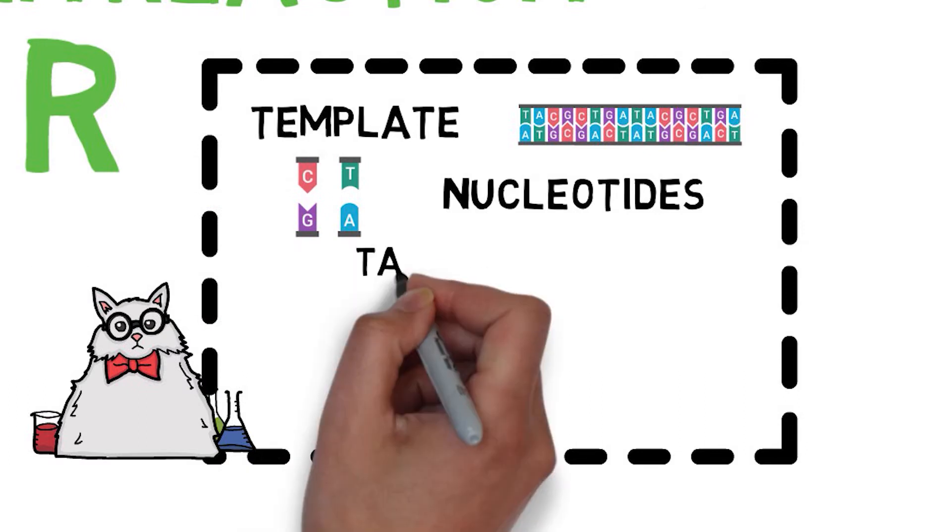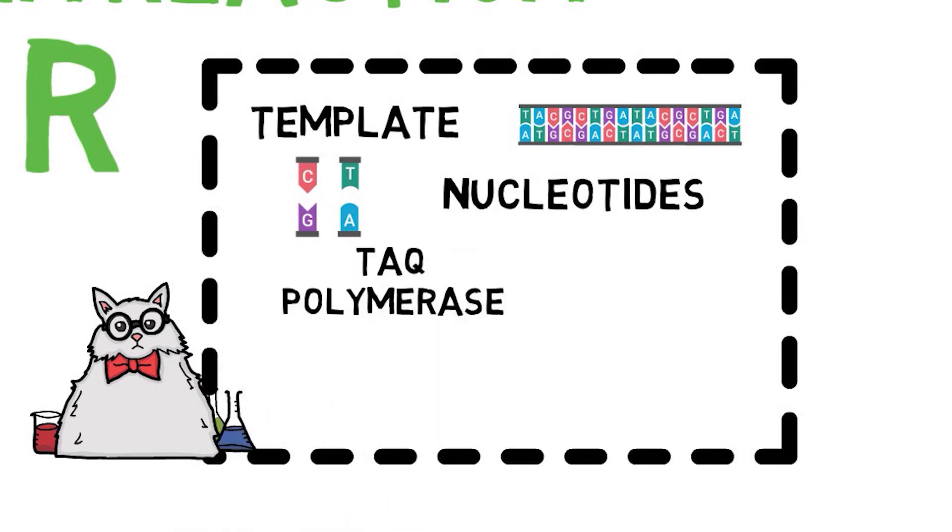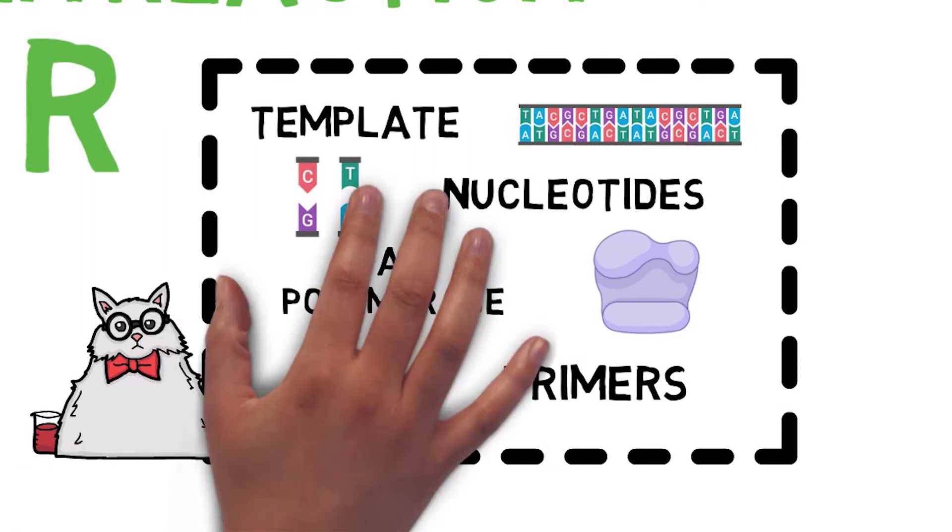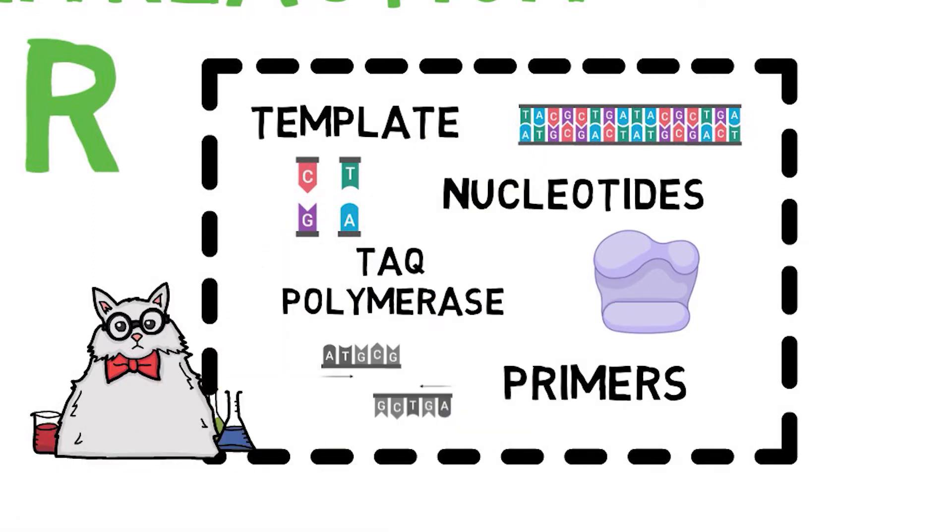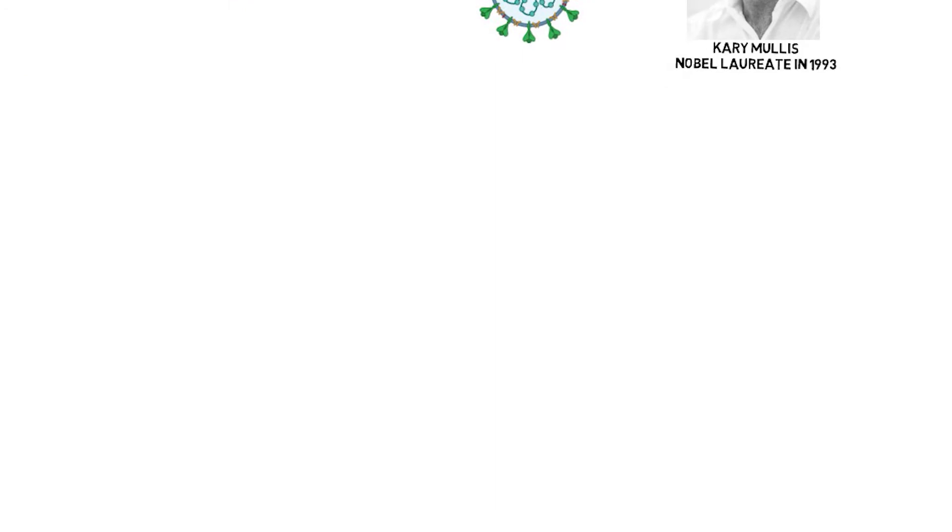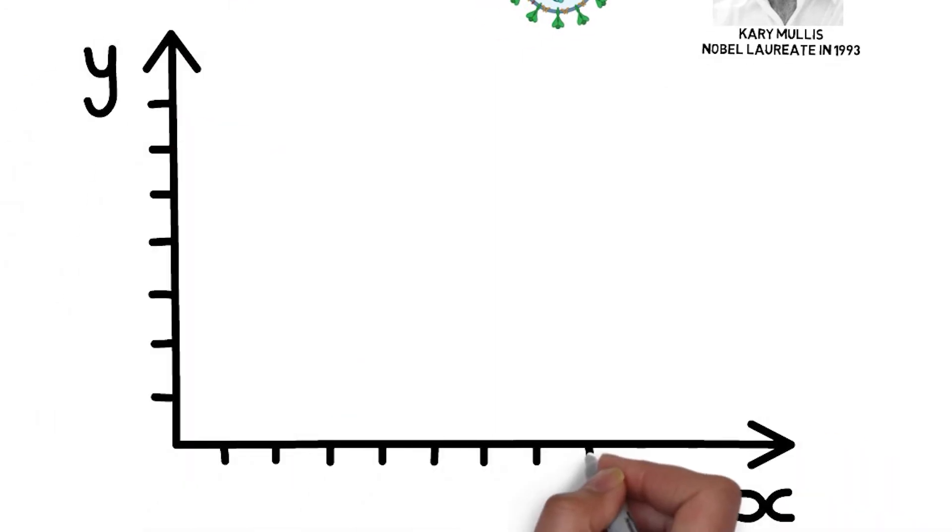The new segments of DNA are made by Taq polymerase, an enzyme that replicates DNA starting from primers. Primers are short strands of DNA that pair with the target sequence on the template. Taq polymerase recognizes them and copies the desired sequence.